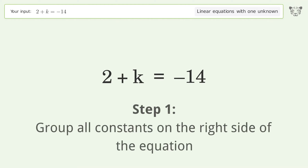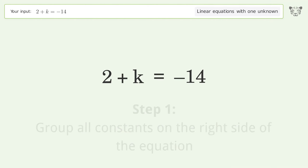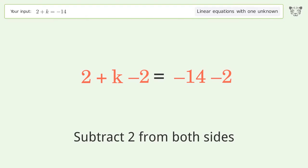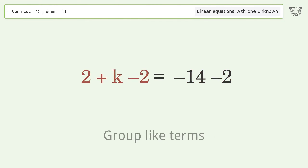Group all constants on the right side of the equation: subtract 2 from both sides. Then group like terms.